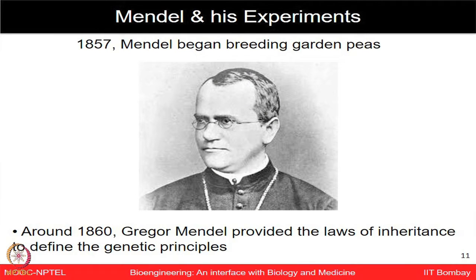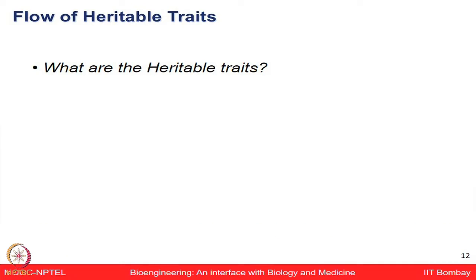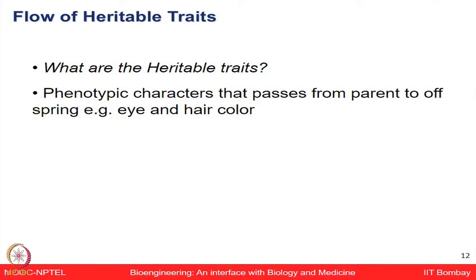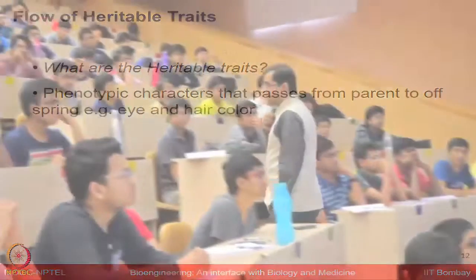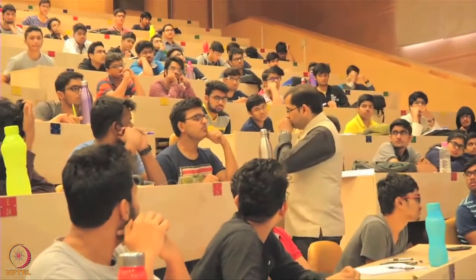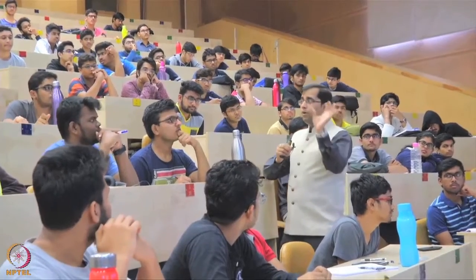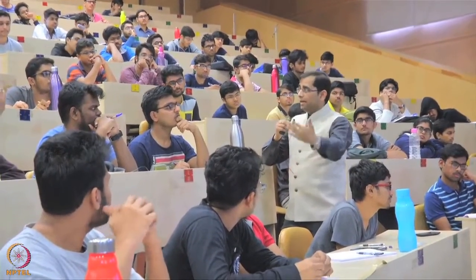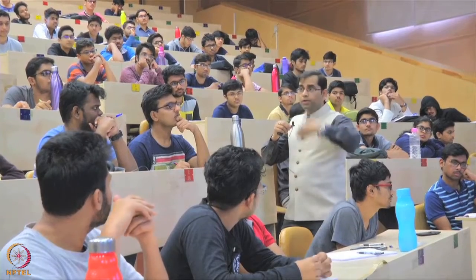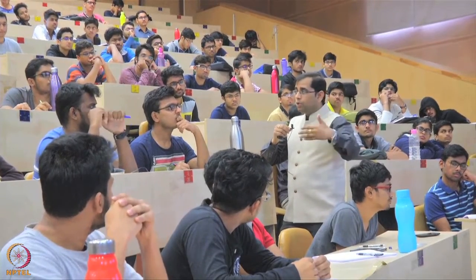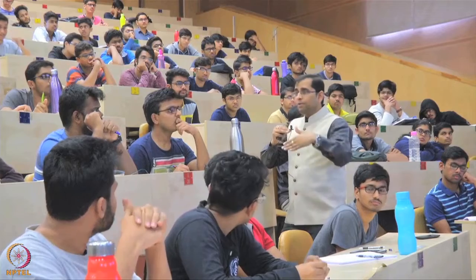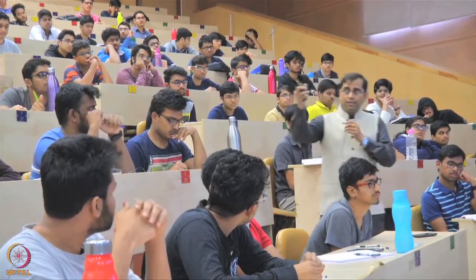In 1860, he was able to come up with the law of inheritance to define genetic principles. Heritable traits include eye color, hair patterns, and different eye colors. To choose true breeding varieties, you cross a purple-colored plant with another purple-colored plant and keep getting purple progeny across generations without segregation — confirming they are true breeding.